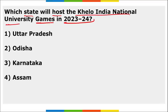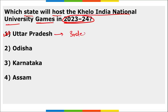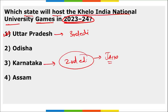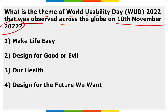Khelo India University Games 2023-24 will be hosted by Uttar Pradesh — the third edition. In Karnataka it was the second edition, where Jain University secured the top position. The theme of World Usability Day, observed on 10th November, is 'Our Health.' The first edition of World Usability Day was observed on 10th November 2005.